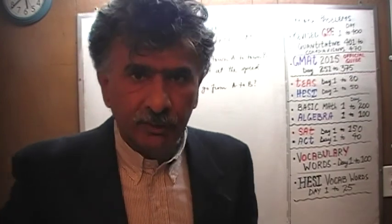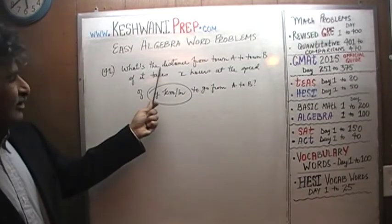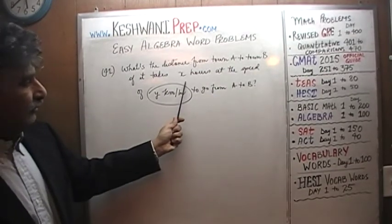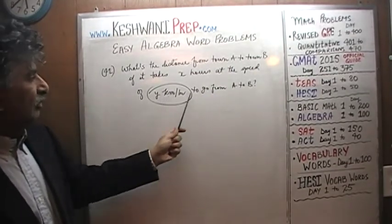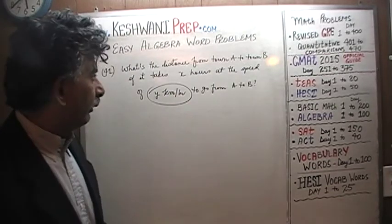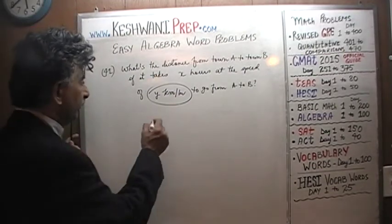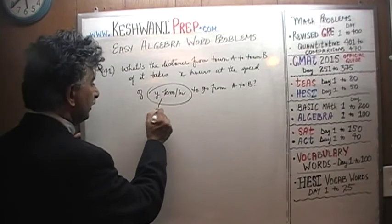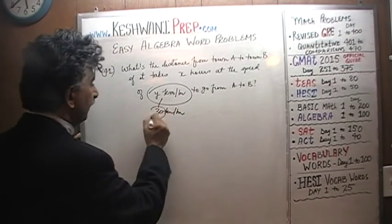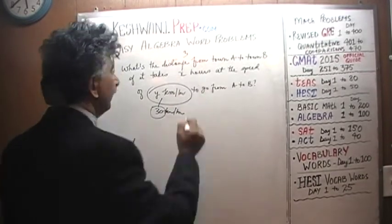Let's take a look at it. It says: what's the distance from A to B if it takes X hours at the speed of Y kilometers to go from A to B? Very simple, very straightforward problem. For example, if you were to plug in numbers here — if you go 30 kilometers per hour, plug in 30 for Y.